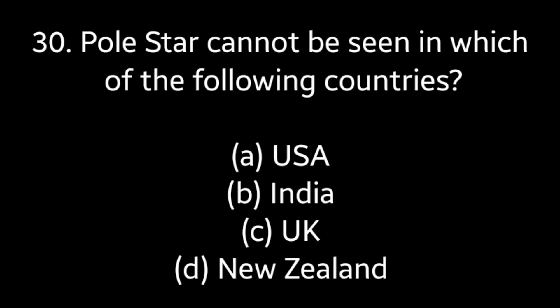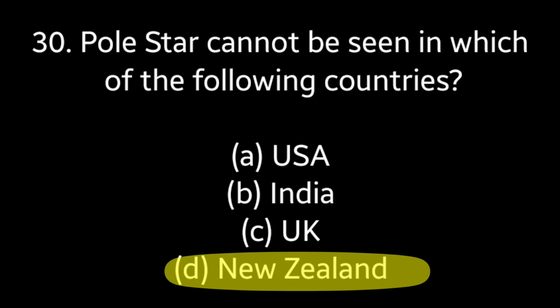Question number 30: Pole star cannot be seen in which of the following countries? Options: USA, India, UK, New Zealand. Answer is option D — New Zealand.